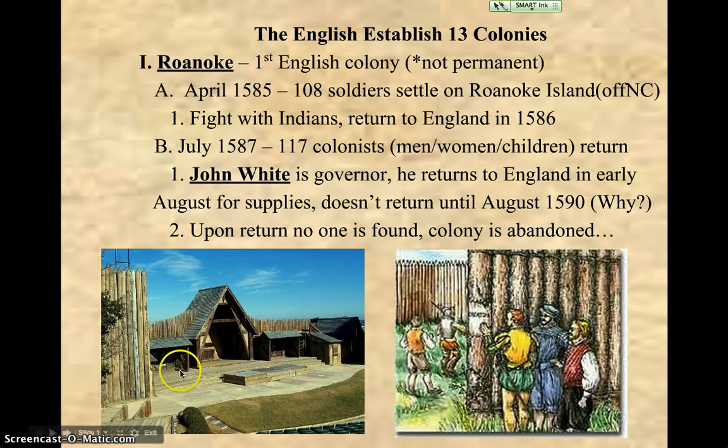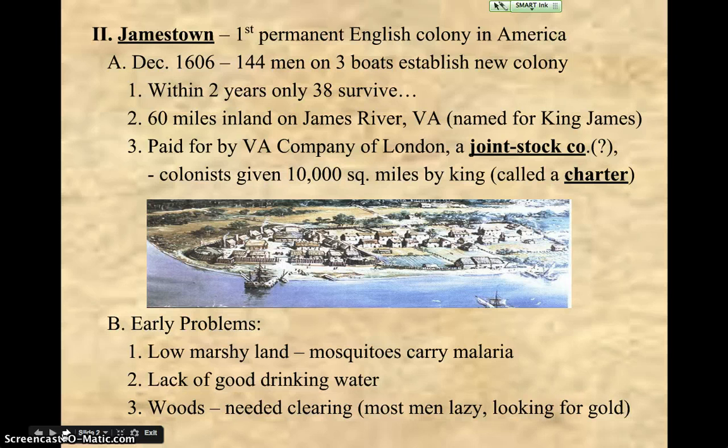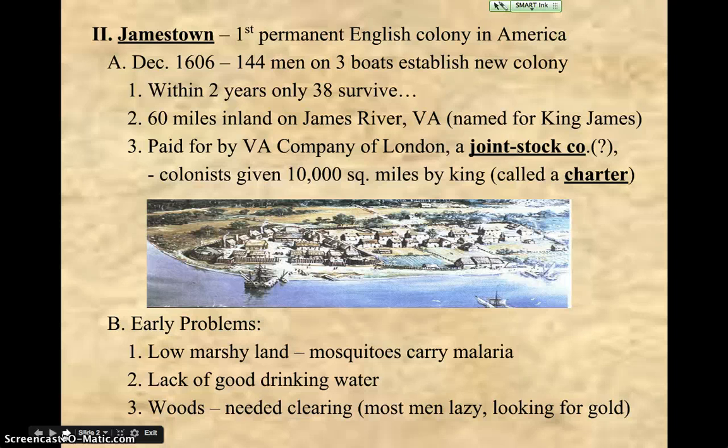Moving on to the second big colony for the English: they have Jamestown, which is settled off the James River in Virginia. This is a permanent settlement — it will be there forever. The English don't come back until December of 1606, almost 17 years later. This time, again, they bring men first — 144 of them. Within two years of living there, between fighting, disease, cold, and starvation, only 38 out of 144 survive.